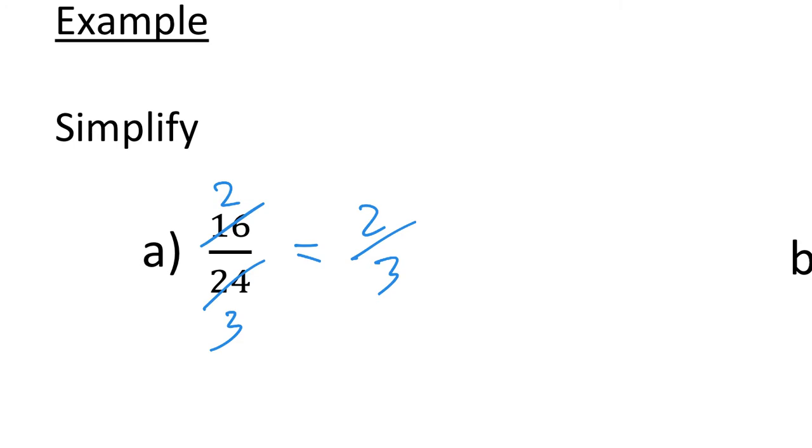There's absolutely nothing wrong with that and that's the way I would advise you to do it, but I just want you to think about it a slightly different way. We could actually factorize out the 8. So you have 8 times 2 and then you have 8 times 3, and then you can just cross out your 8 leaving you 2 over 3 as you had before. And that's really the way we want to think about these algebraic examples.